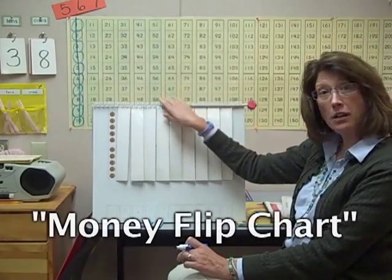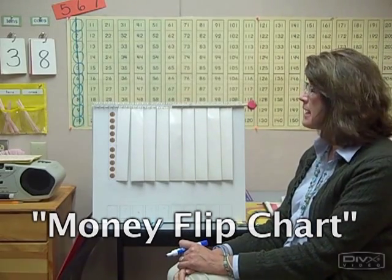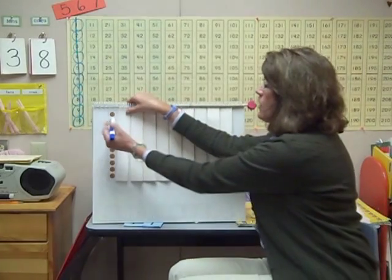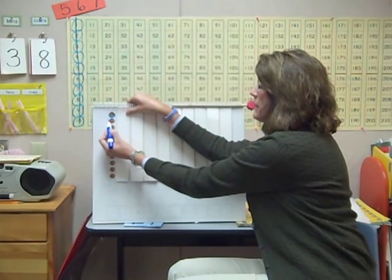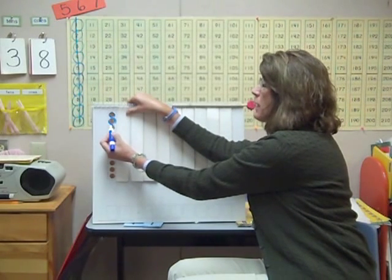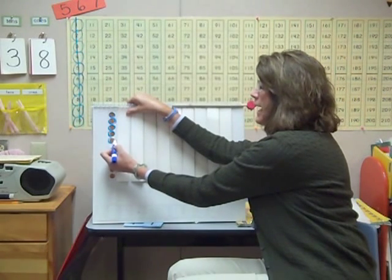This is the money flip chart that's used in first and second grades. Students are doing a similar thing - adding one penny each day by putting a circle around it. The circle represents one and every day they add one.